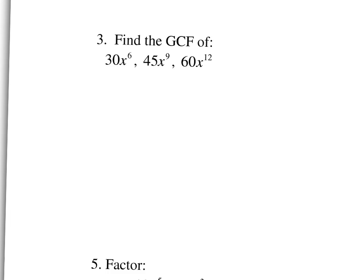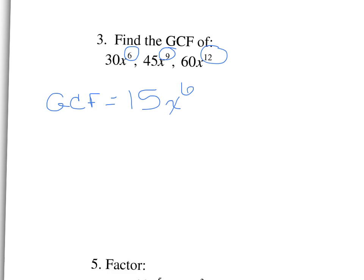Find the GCF of 30X to the 6th, 45X to the 9th, and 60X to the 12th. What's the largest number that goes into 30, 45, and 60? If you need to, use the tree on those. You should find the GCF of the numbers is 15. How many X's are common? You choose the smallest exponent. So the answer is 15X to the 6th.